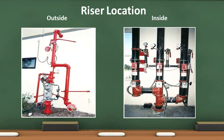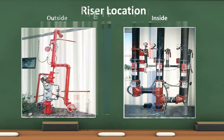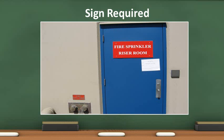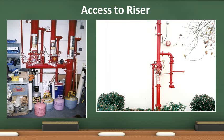These photos show examples of two types of sprinkler risers. Risers may be located outside or inside the building. If fire sprinkler risers are located inside a room, a sign on the door to the riser room is required. Keys for the door shall be located inside a key box. Access to all fire protection equipment is required. Nothing of any kind shall be stored within three feet of all sprinkler equipment, including the riser.